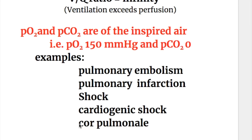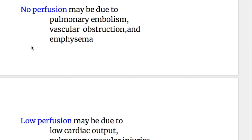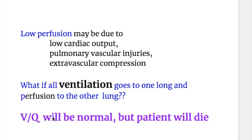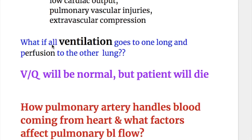No perfusion may be due to pulmonary embolism, vascular obstruction, and emphysema. Low perfusion may be due to low cardiac output, pulmonary vascular injuries, and extravascular compressions. If ventilation goes to one lung and perfusion to the other, V/Q will be normal but the patient will die.